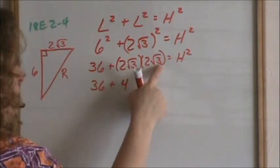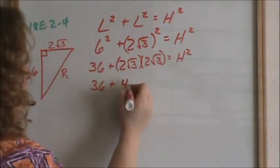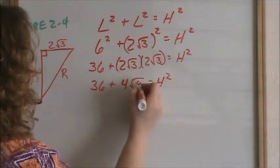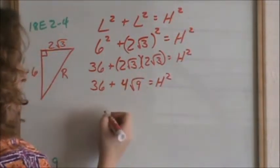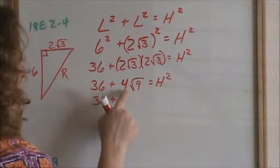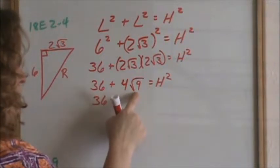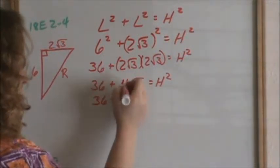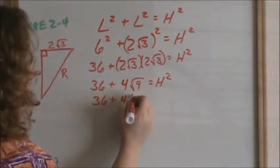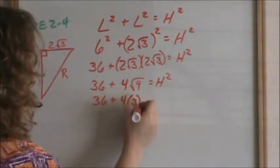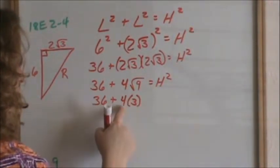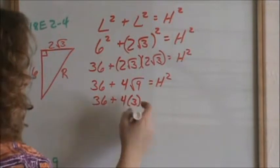Square root of 3 times the square root of 3 is square root of 9. Remember to always simplify your radicals. So, 4 times the square root of 9 — keep carrying your 4 down. Square root of 9 is 3, so that means 4 times the square root of 9, which means 4 times 3.